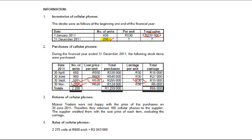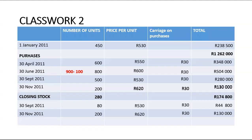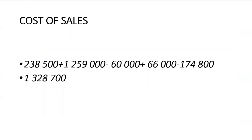Starting with cost of sales: you take opening stock, plus all purchases for the year, plus carriage on purchases, then minus the returns. Of the 900 units, 100 were returned — 100 units multiplied by $600 gives $60,000, which is why we minus the $60,000. Then you subtract the value of closing stock, which is $174,800. So cost of sales = opening stock + purchases + carriage − returns − closing stock = $1,328,700.